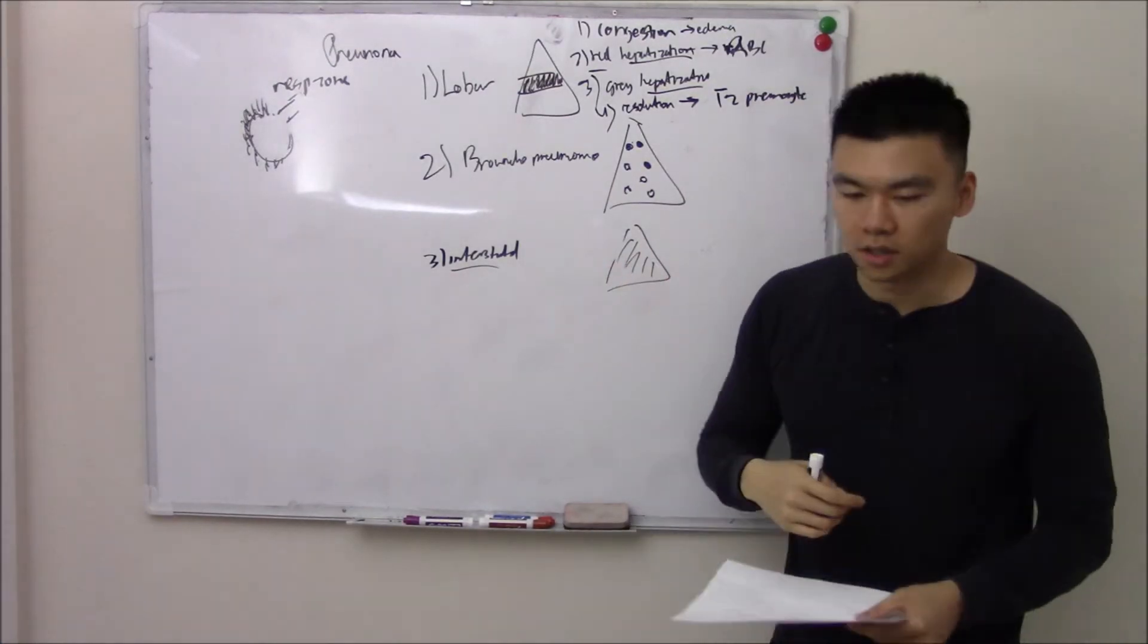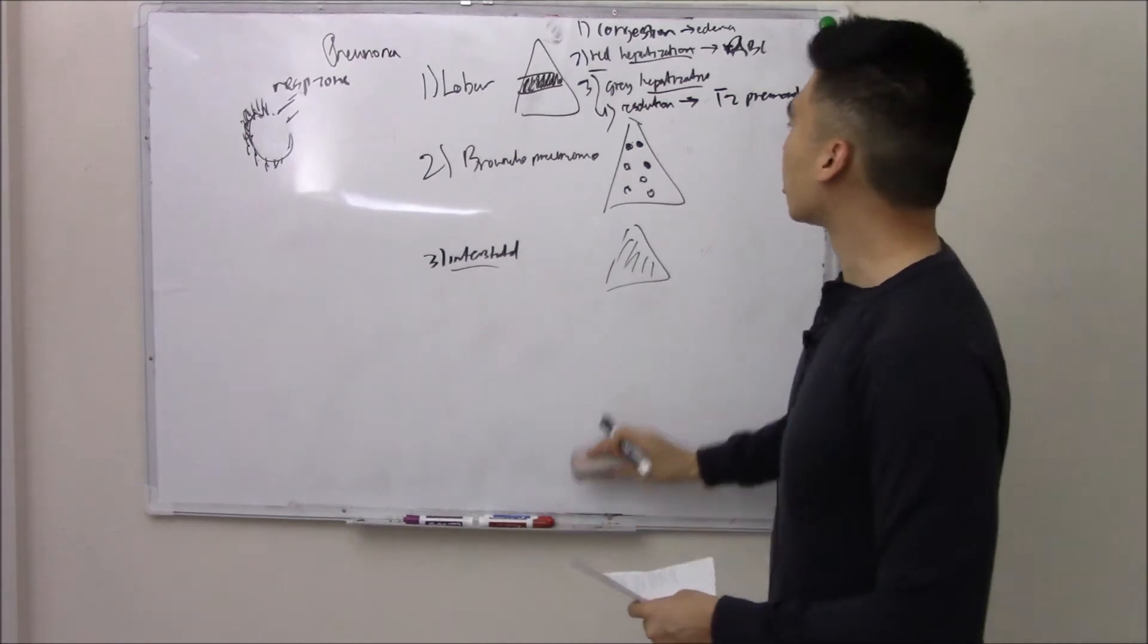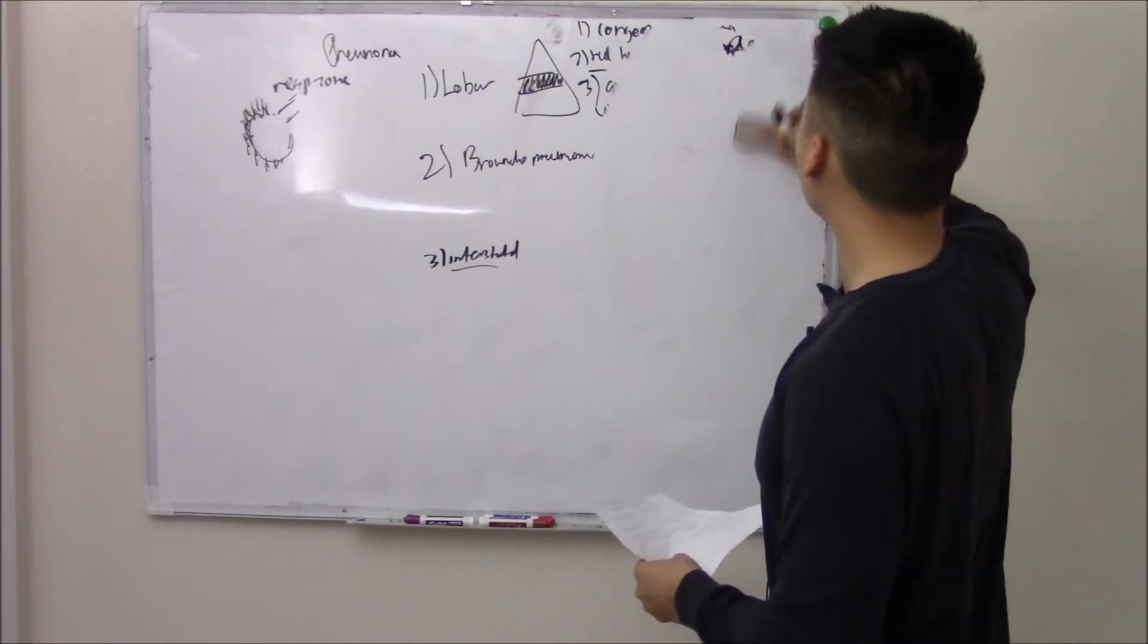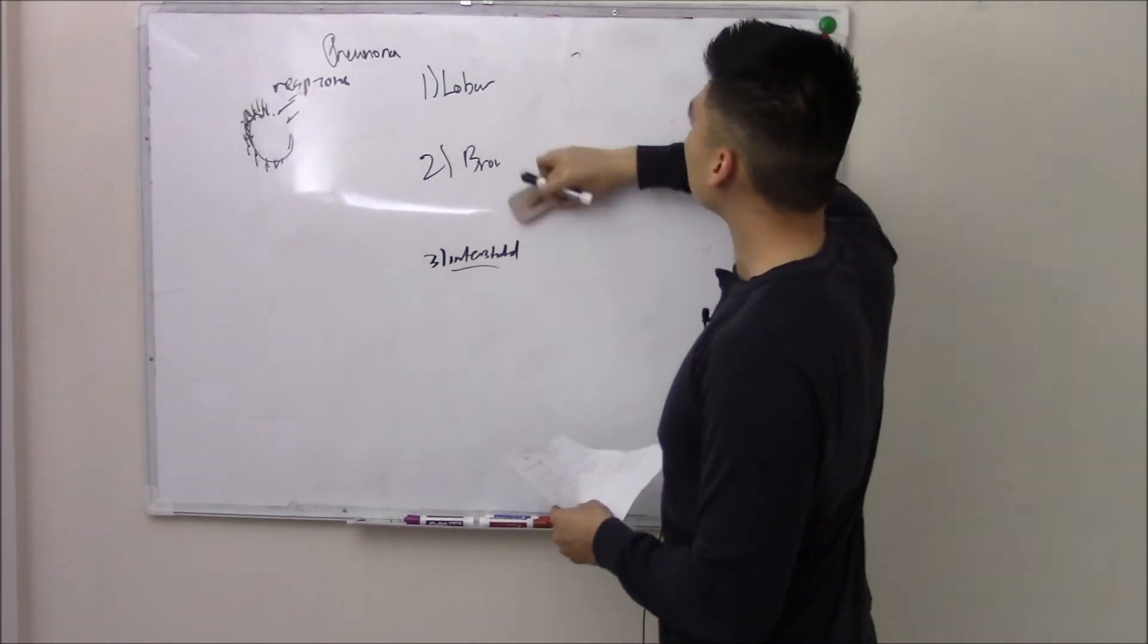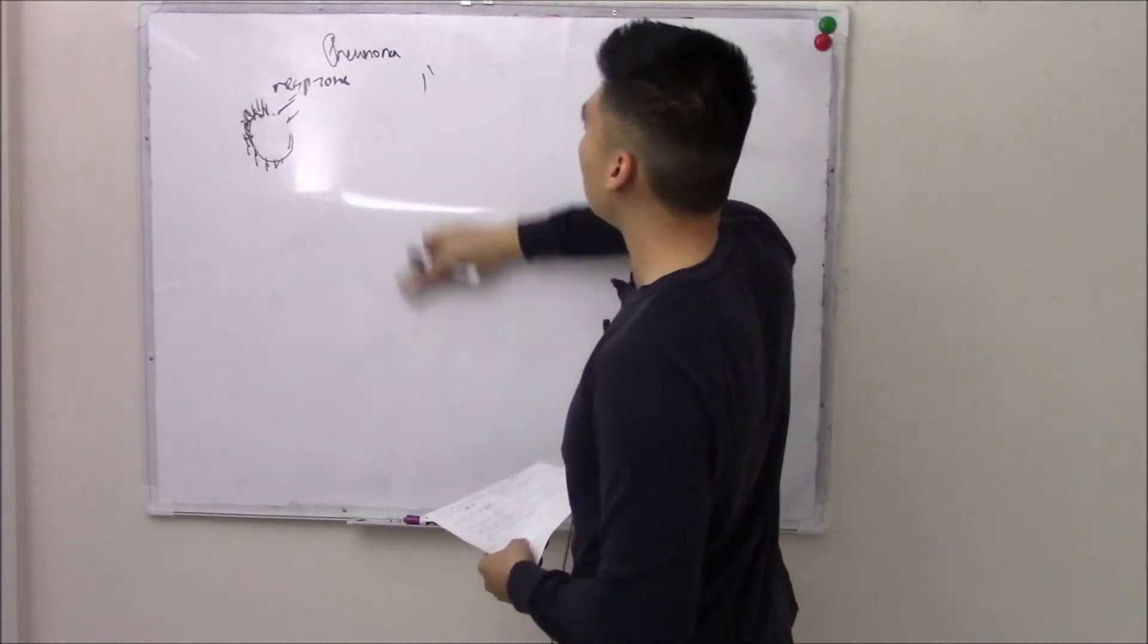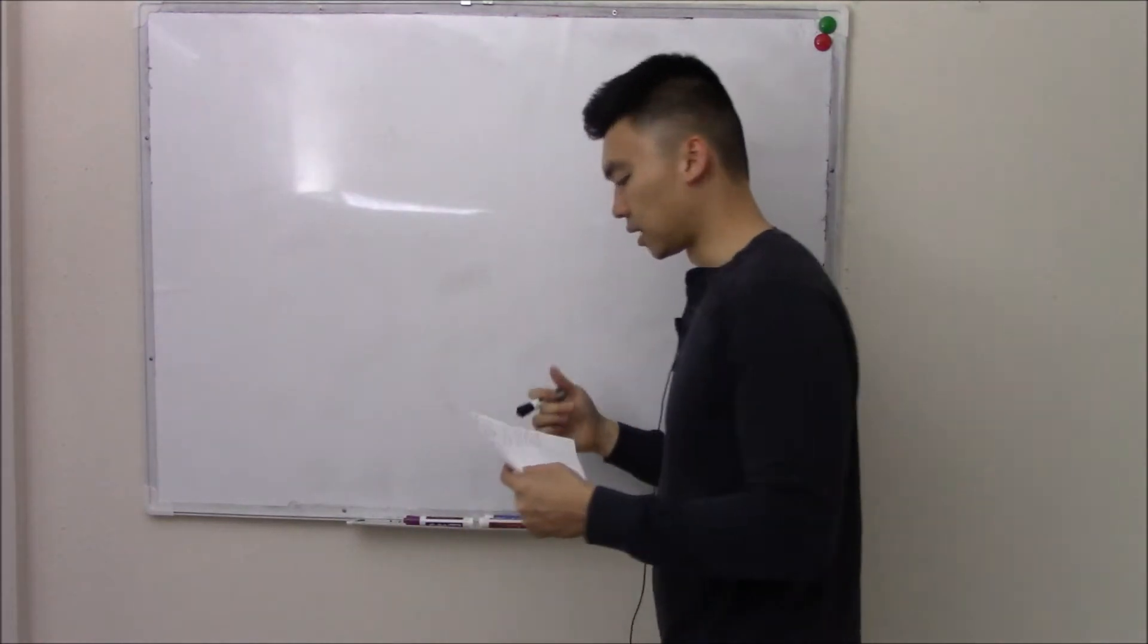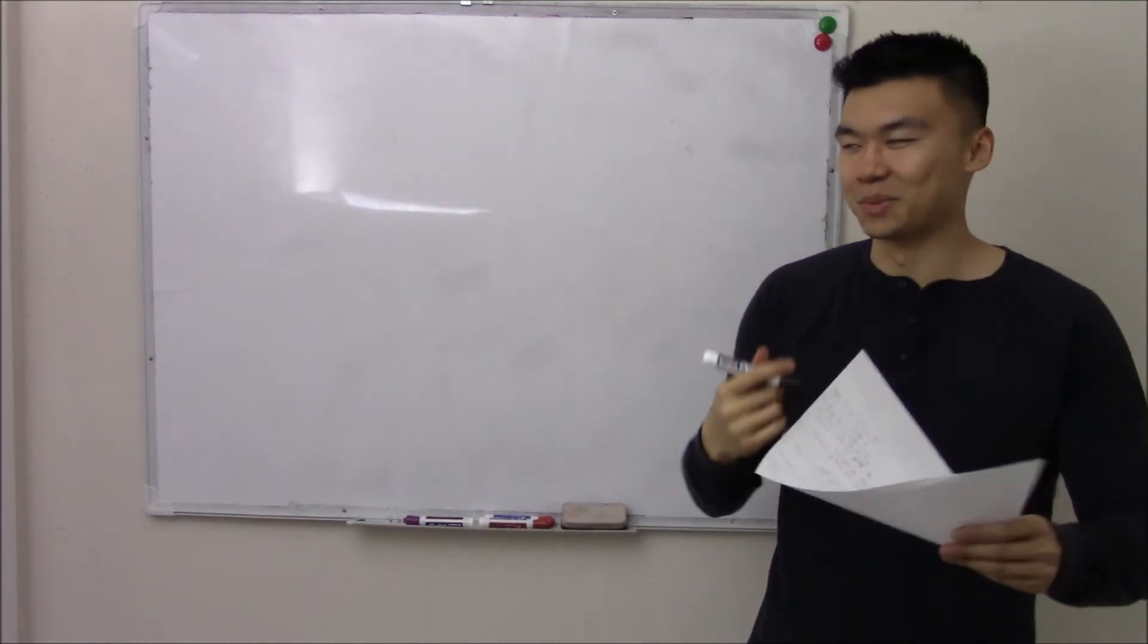That is pneumonia. Those are your three types. Gave you the bugs. Something you should know, the bugs differ. The bugs differ depending on special circumstances. You should know the most common bugs, which we just talked about, strep pneumonia and mycoplasma. But in certain different situations, the bugs could be different.